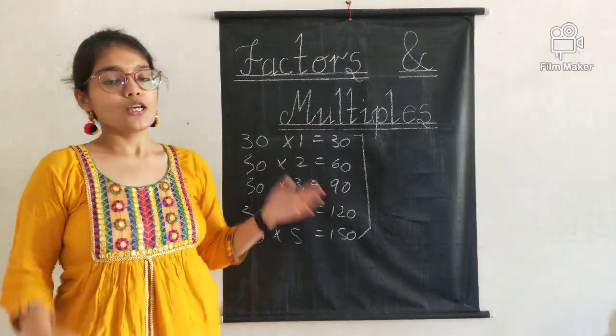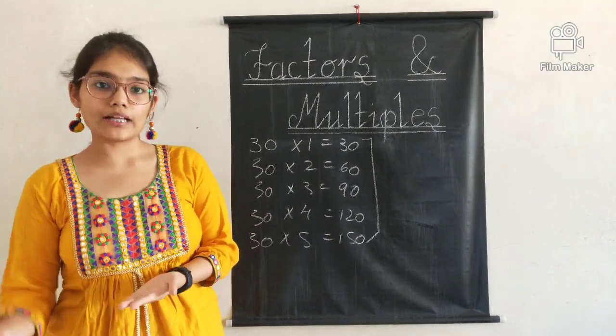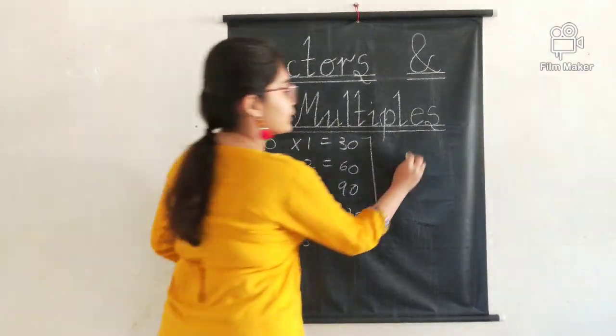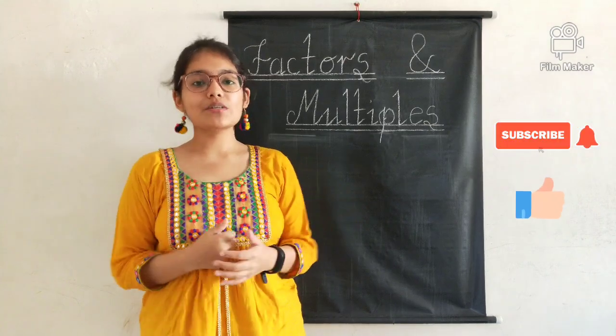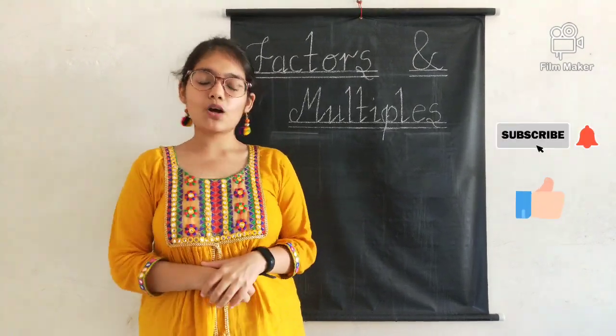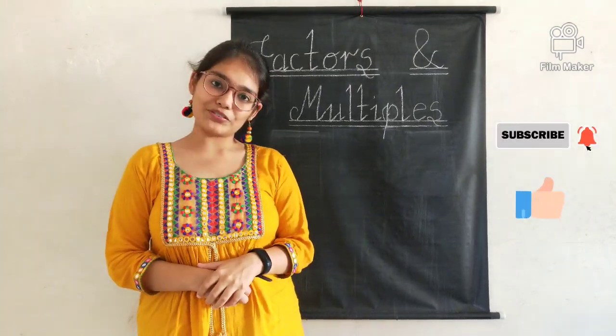Let's move on to our next topic of today's discussion, which is multiples. So what are multiples? When we multiply a number by different natural numbers, we get a lot of new numbers. For example, we take 30. We multiply 30 by 1, then 2, then 3, then 4, then 5, and so on.